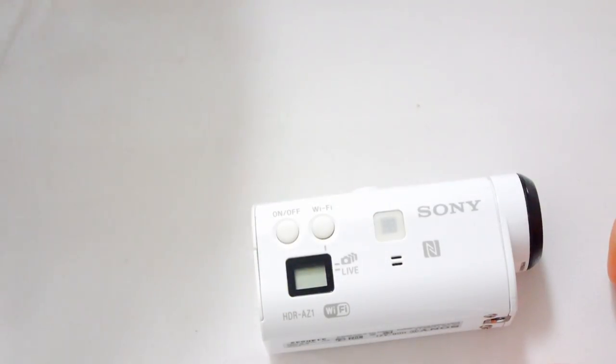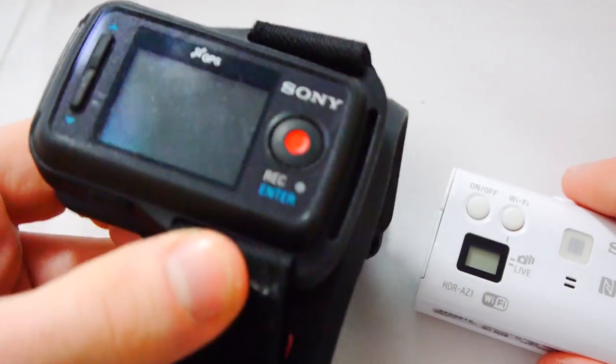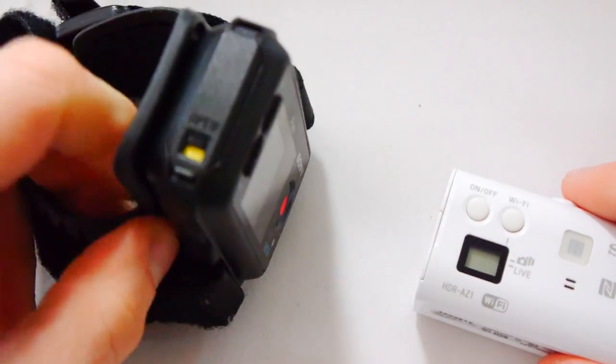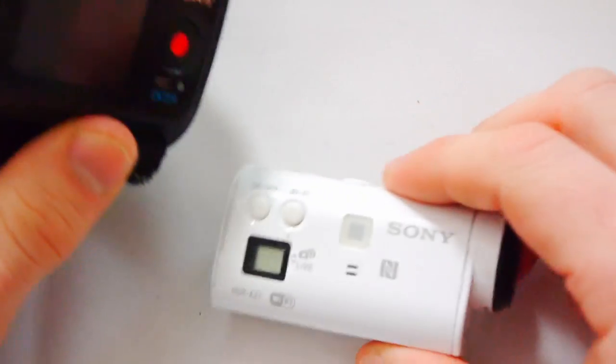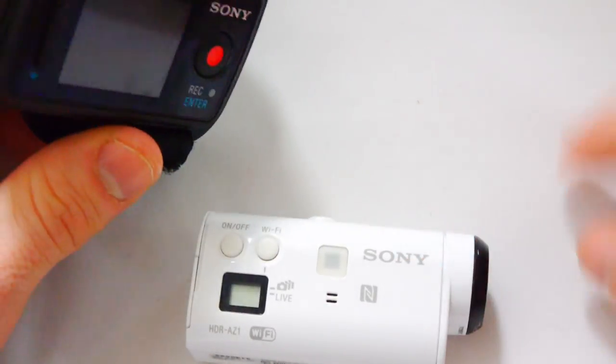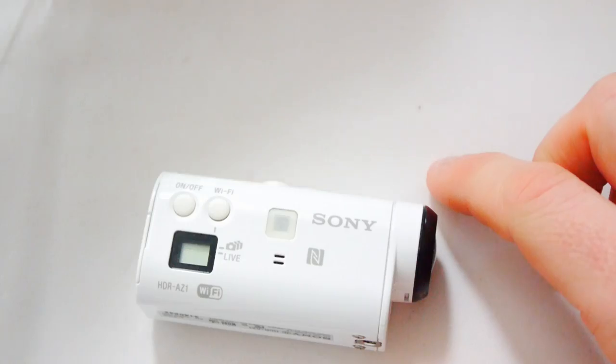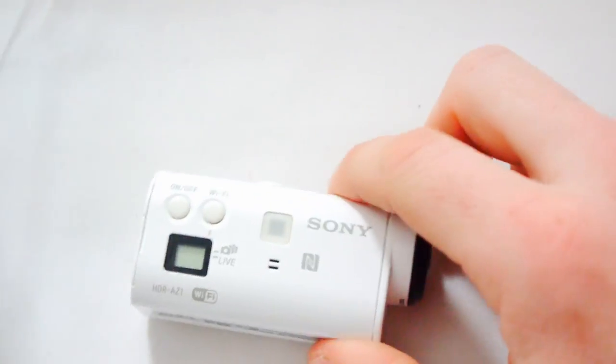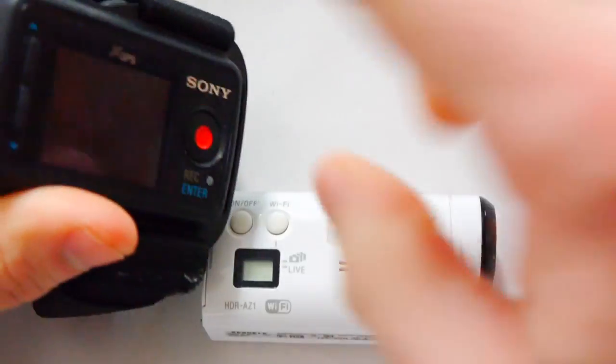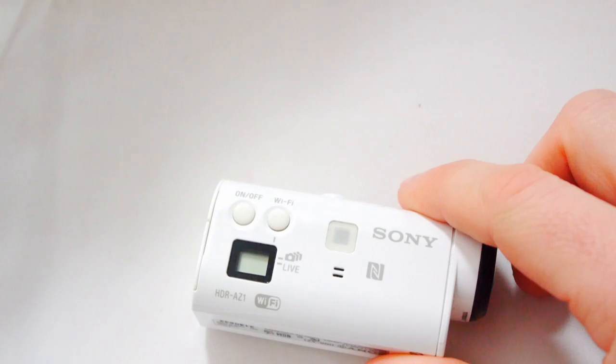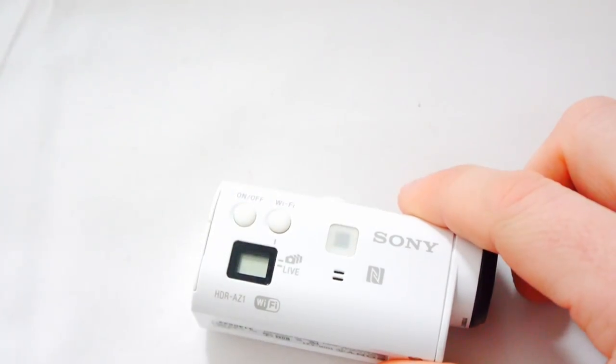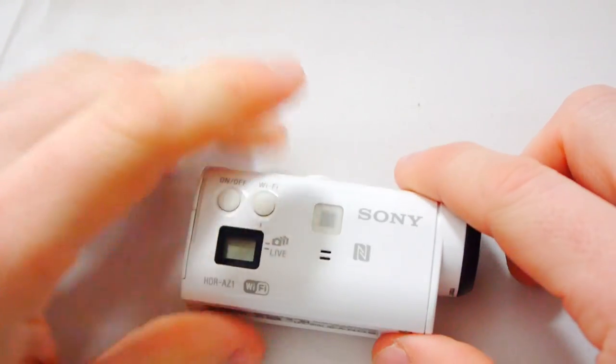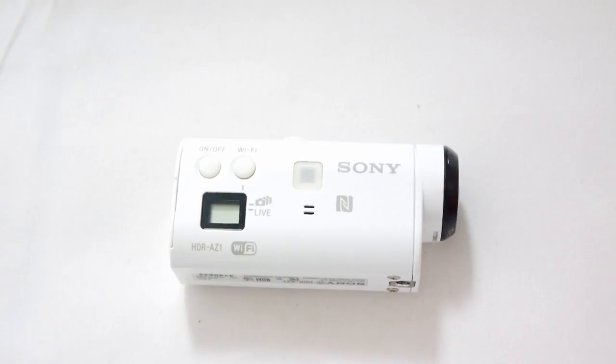Now, you don't really need much for this. I have the Live View Remote, which comes with the Action Camera Mini. You can also use your phone to work this. What I will say is, if you don't have one of these for your Sony Action Camera, you should try and get a connection cable to your TV, and that will help you focus it. Because what you need to do is, when you put the lens in, you need to kind of tighten it and screw it to try and get it to the right part. And the best way to do that is to hook it up to a TV at the same time.